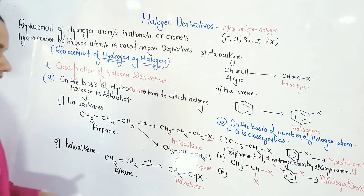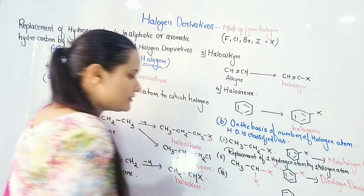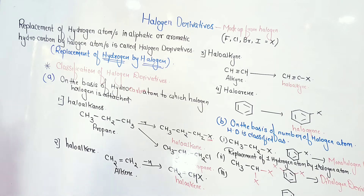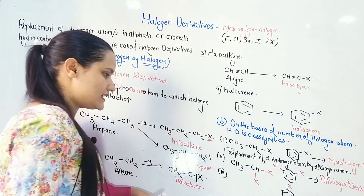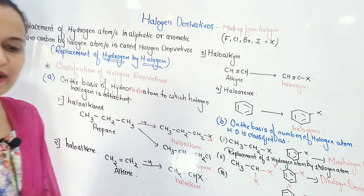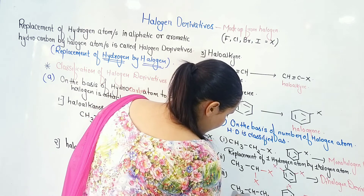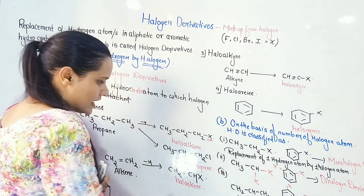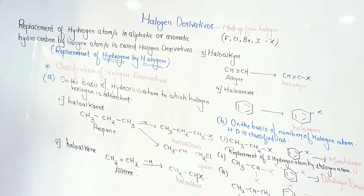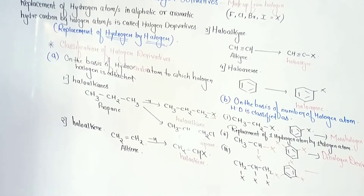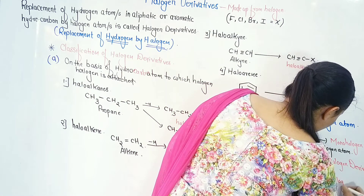The third classification is where three halogens are replaced. For example on a benzene ring, if I replace three hydrogens by three halogens — one here, one here, one here — the compound is known as a trihalogen derivative. We can also take an example such as CHCl3 (chloroform) where three halogens are present. So my compound made from three halogens is called a trihalogen derivative.